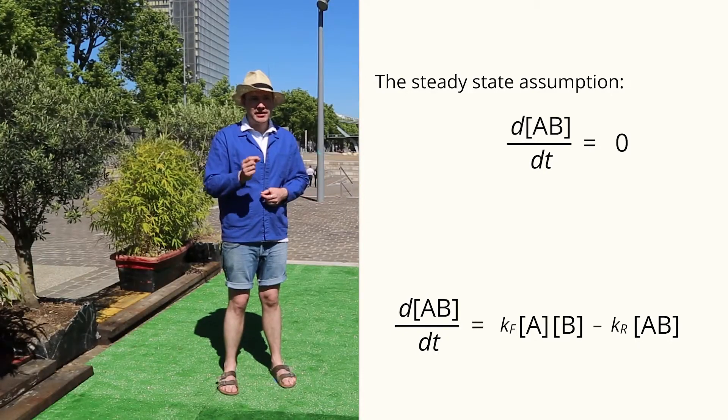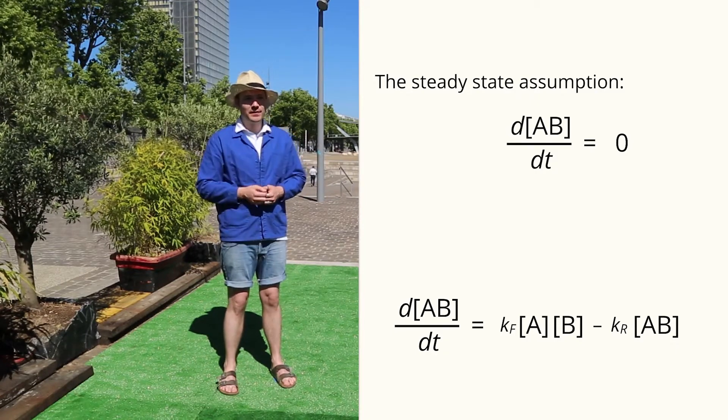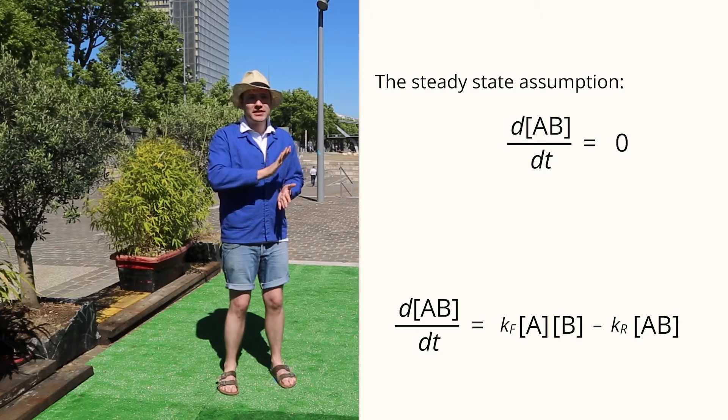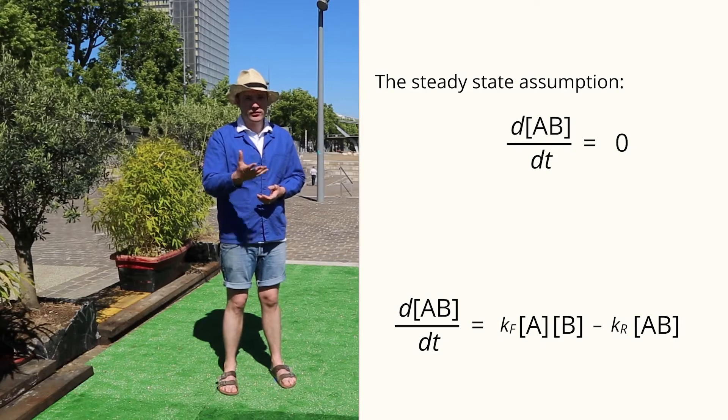We can represent this state mathematically by assuming or requiring that d[AB]/dt is zero. This is nothing but the definition of the steady state. The concentration [AB] has zero change over time.